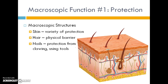The first macroscopic function of the skin is protection. All the things we'll discuss belong to the organ system called the integumentary system. Starting with hair: hair is a physical barrier that prevents UV rays and other things from hitting the skin cells. Nails are also part of the integumentary system and offer protection from abrasion — think of our ancestors using nails as claws for digging and using tools. The skin itself has lots of different layers, and those layers offer protection.